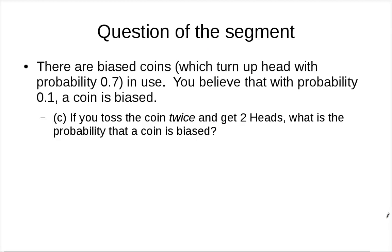So here is the question for this segment: in the same biased coin situation — biased coin with probability 0.1 and heads probability 0.7 — you toss the coin twice and get two heads. What's the probability that the coin is biased? Think about it, and I'll see you in the next topic. Bye.